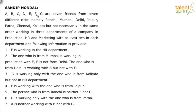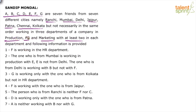So we have 7 friends A to G, 7 cities — Ranchi, Mumbai, Delhi, Jaipur, Patna, Chennai, Kolkata — and 3 departments: production, HR, and marketing. These 7 guys are working in these 3 departments with at least 2 in each. So 2 times 3 means 6 persons are distributed, and 1 department will have 3 persons. Two departments will have 2 persons each and the third will have 3 persons. Seven clues are given, like F is working in HR, the one from Mumbai is working in production with E, E is not from Delhi, and so on.